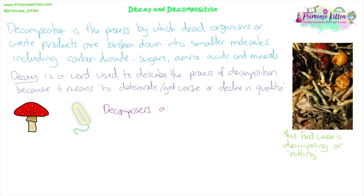Decomposers are the organisms that do the decomposing. They break down the dead tissue or the waste using enzymes. Examples are fungi and bacteria, and this is how they get their nutrients — this is how they feed. They use enzymes, they break down the food and they absorb it. So this is their nutrition — by breaking down dead material.